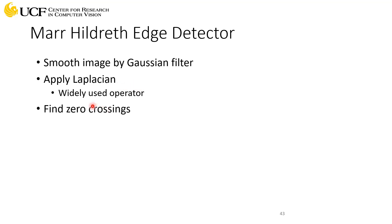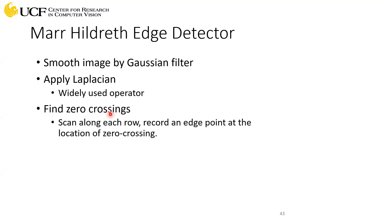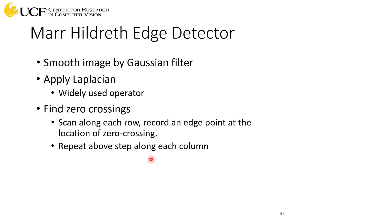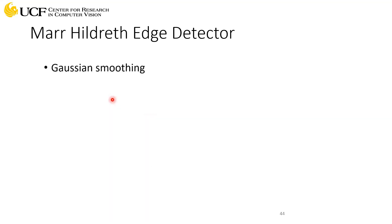Once we have that output, we will try to find zero crossings. The idea is we will do this in both directions — the x direction and the y direction — to find these crossings. Once we have those, we say these are the identified edges. So these three are the main steps in this algorithm.